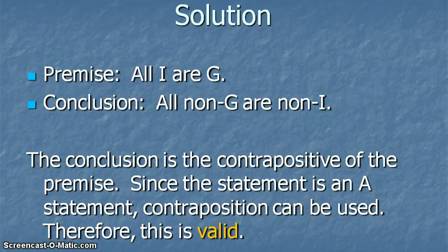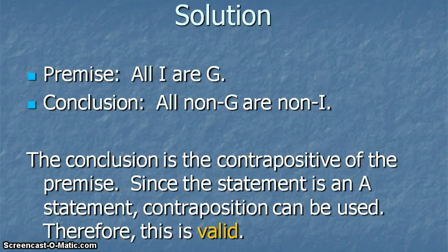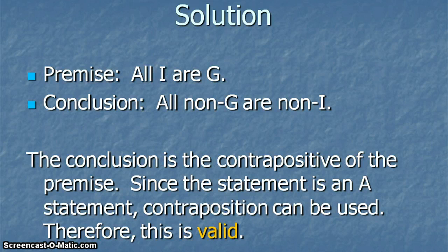What we're going to do is change this. The premise is all I are G — insured people, people with good medical coverage. The conclusion is all non-G are non-I — people with bad medical coverage and uninsured people. The subject and predicate are switched and both terms are turned to their term complement, so it's contraposition. Since it's an A statement and contraposition is being used, the argument is valid. If it had been no I are G, therefore no non-G are non-I, it would have been invalid — that would be illicit contraposition.